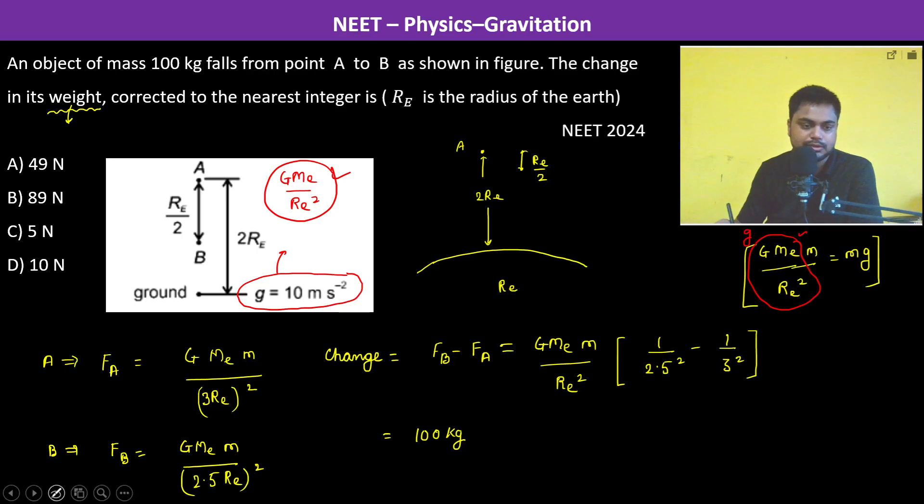So therefore this is equal to mg. Now we have 100 kg into 10 meter per second square into—now this we have to do—this is 1 by 2.5 square, so this is 100 by 25 minus 1 by 100 by 25 whole square, because 2.5 whole square.